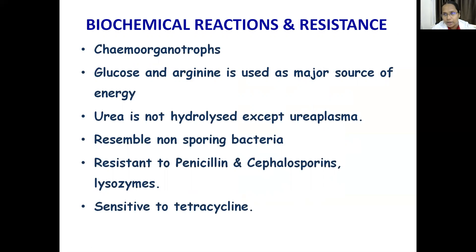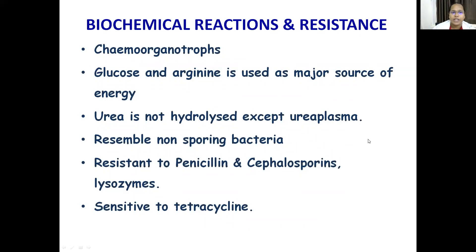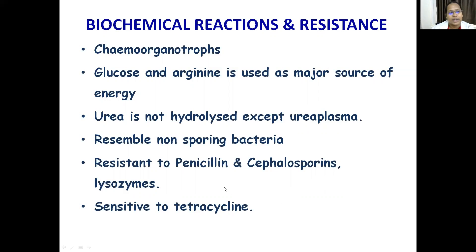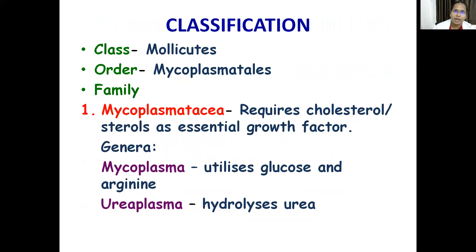Biochemically, Mycoplasma are chemo-organotrophs; metabolism is by fermentation. Glucose and arginine are used as major energy sources. Urea is not hydrolyzed except by Ureaplasma urealyticum, which hydrolyzes urea — remember, the name itself suggests this. All other Mycoplasma species are urease-negative. Regarding resistance: they are resistant to penicillins and cephalosporins because they are cell-wall-deficient, and they are sensitive to tetracyclines.